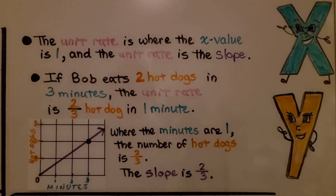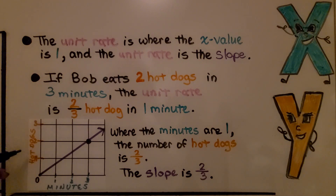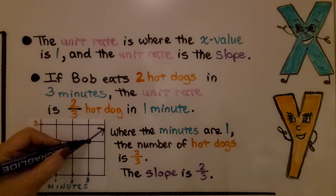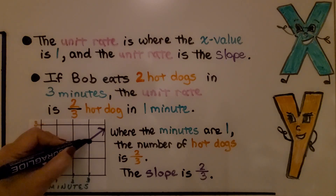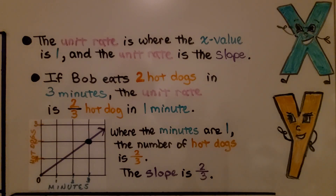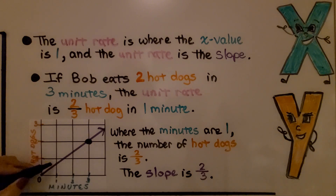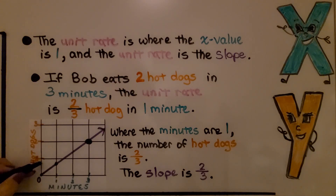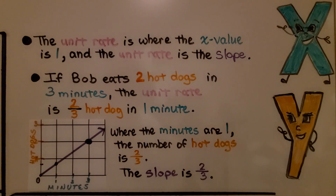The unit rate is where the x-value is 1, and the unit rate is the slope. If Bob eats 2 hot dogs in 3 minutes, the unit rate is 2 thirds of a hot dog in 1 minute. Our point is (3, 2) — 3 minutes for x and 2 hot dogs for y. But the unit rate is down at x = 1, where y = 2 thirds — not quite 1 and more than half. It's where the minutes are 1 and the number of hot dogs is 2 thirds. The slope is 2 thirds: 2 for the rise and 3 for the run.